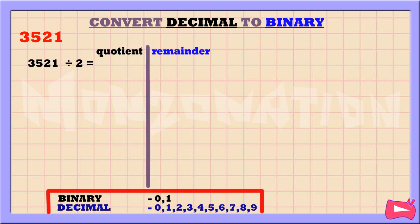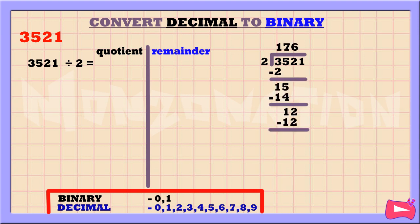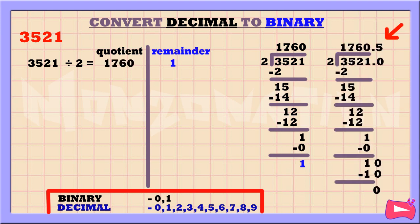The first step is to divide 3521 by 2. Without a calculator, 3521 divided by 2 is 1760, remainder 1. If you are using a calculator, the result is 1760.5. In that case, you'll have to multiply 0.5 by 2 — 0.5 times 2 is 1. Whenever you get a decimal in your answer, that means it's remainder 1 in binary.